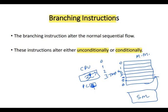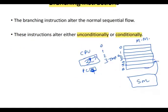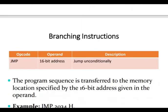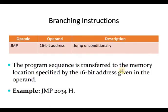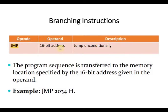Let us discuss examples of branching instructions. Unconditional branching uses the JMP instruction, with a 16-bit address. For example: JMP 2034. The address is 16-bit, not 8-bit, in the 8085 architecture.